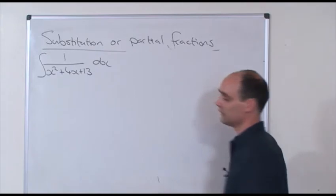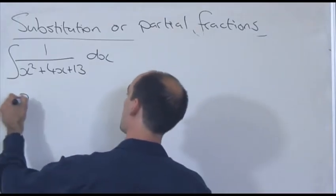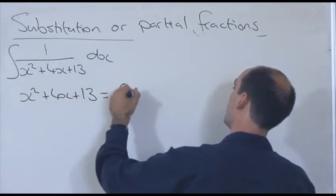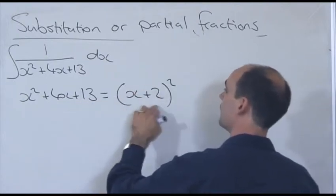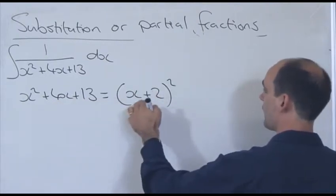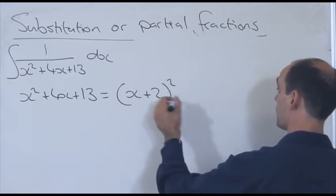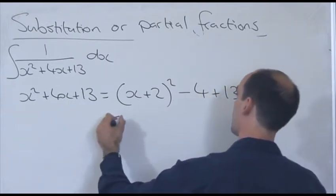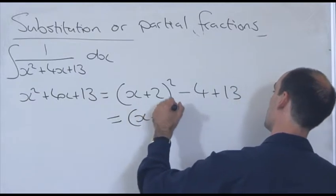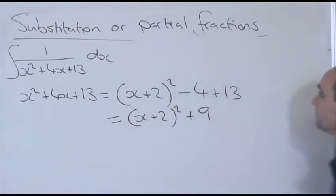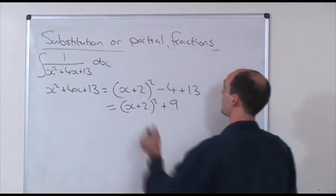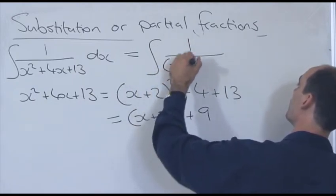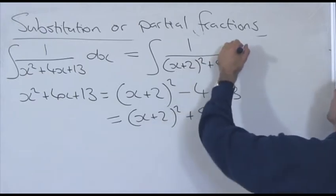To complete the square: x squared plus 4x plus 13 equals (x plus 2) squared. Taking half of the coefficient of x, (x plus 2) squared expands to x squared plus 4x plus 4, so I subtract the 4 and keep my 13. That gives (x plus 2) squared plus 9. So we can rewrite this integral as the integral of 1 over (x plus 2) squared plus 9 with respect to x.